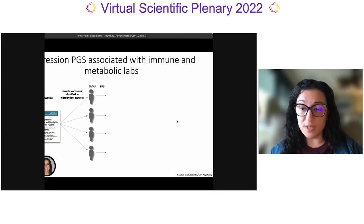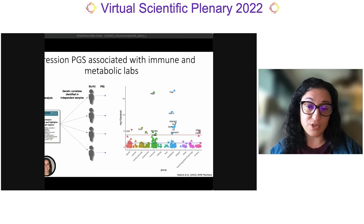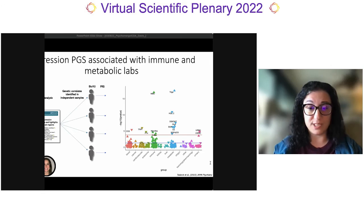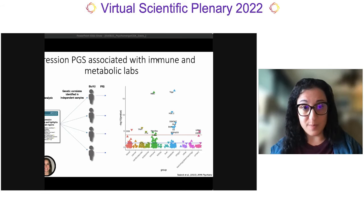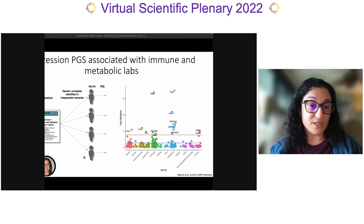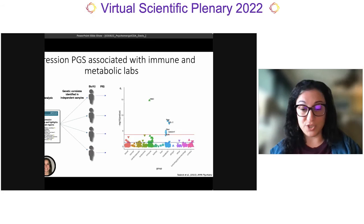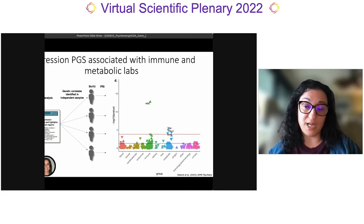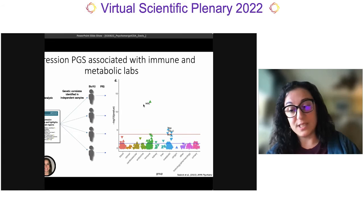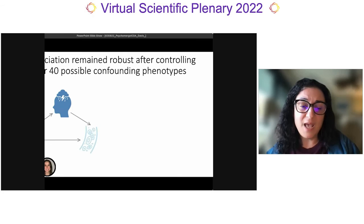We then turned to the depression polygenic score and deployed it in the LabWAS framework. We observed associations with several metabolic traits, vitamin D, and multiple immune markers including white blood cell count. We then adjusted for the presence of depression and anxiety diagnoses, then depression, anxiety, and adjustment reaction, and then also adding BMI. We were impressed that the white blood cell marker still showed a robust association even after all of these adjustments.